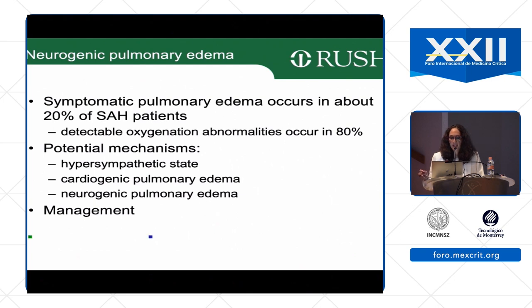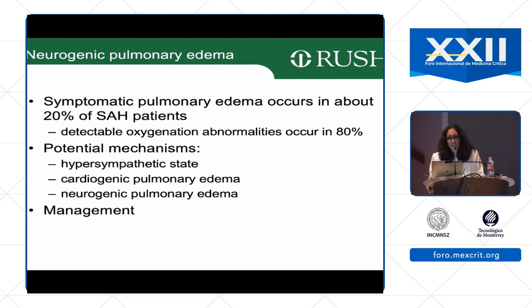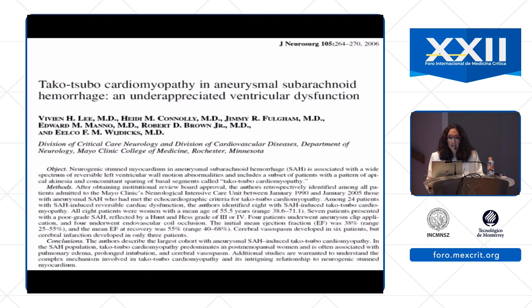Management of neurogenic pulmonary edema requires diuresis. While diuresing SAH patients is historically taught as contraindicated, if that's what the patient needs, you must do it — otherwise the situation becomes much worse. Oxygenate the patient; if FiO2 requirements keep rising, cautiously diurese while closely watching volume status.